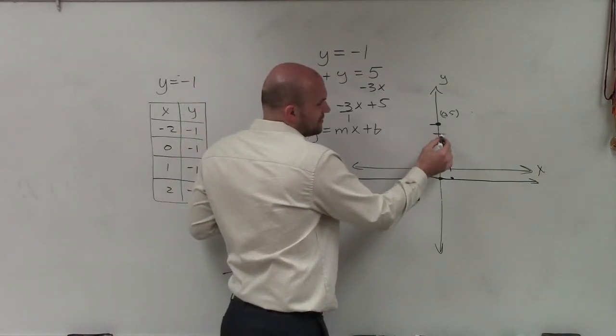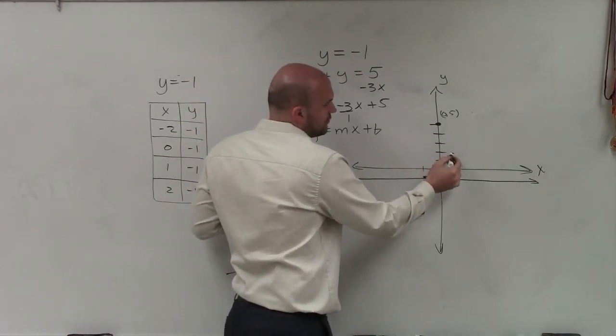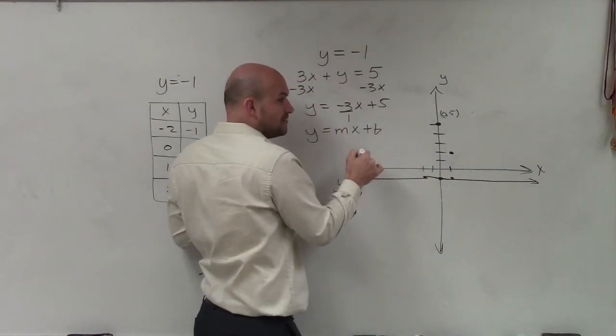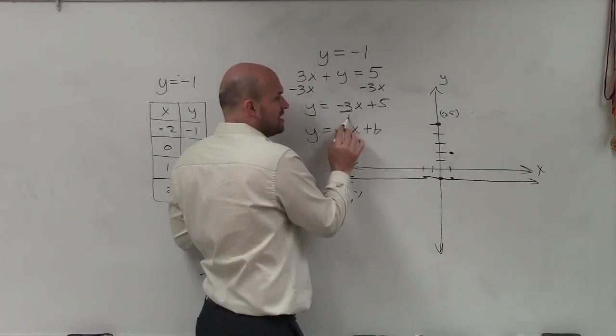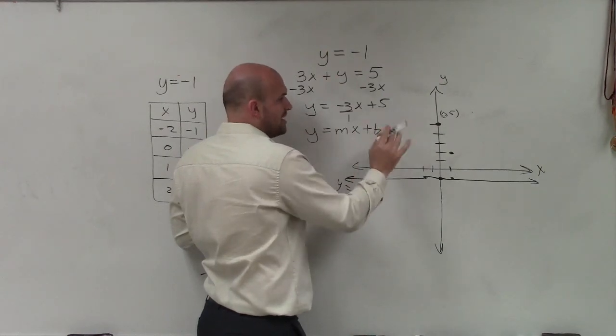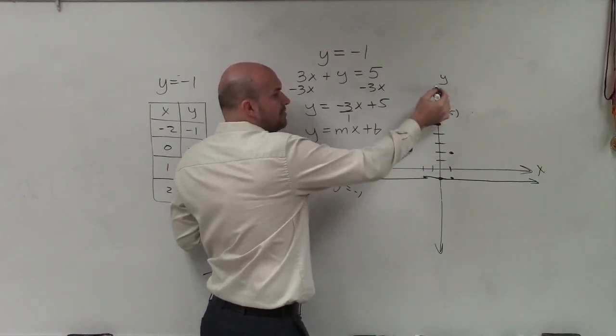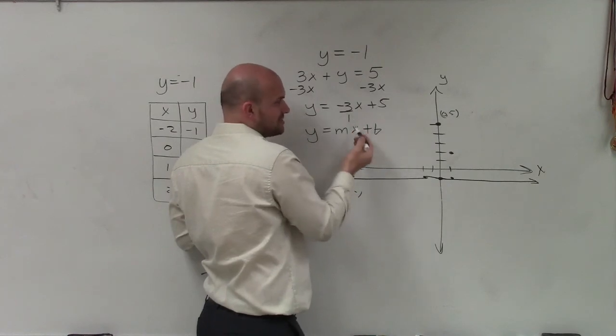So that means I'm going to go down 3: 1, 2, 3, over 1. Since the 3 is negative, I'm going to go down in the vertical direction. And 1 is positive, I'm going to go over 1 in the positive direction. You can also go up and to the left, which would also produce a negative slope.